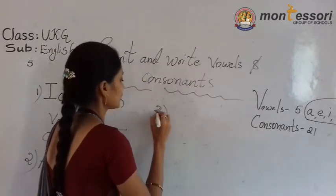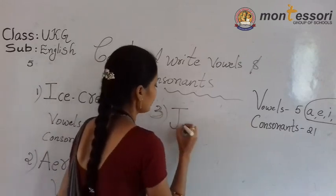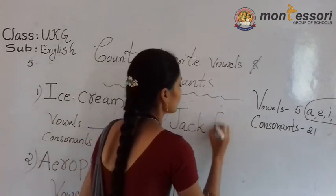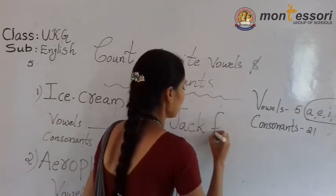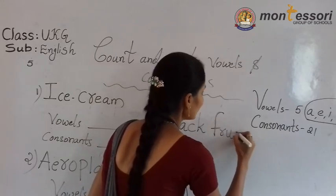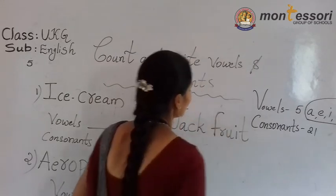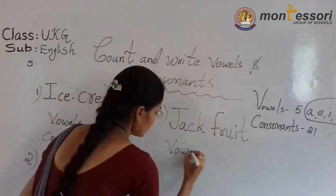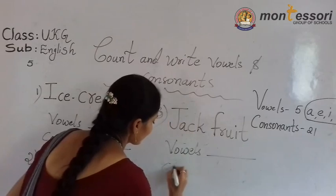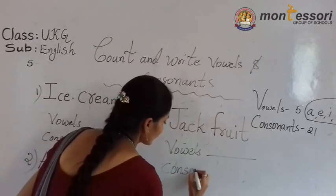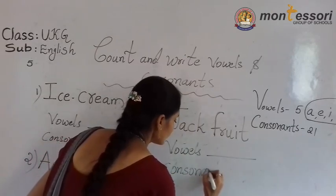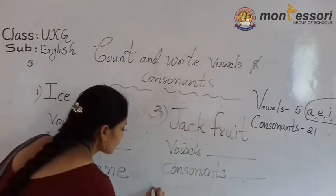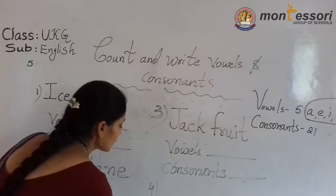Third one: J, A, C, K, F, R, U, I, T — Jackfruit. Vowels. Consonants. Next.